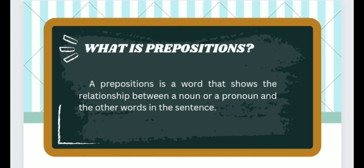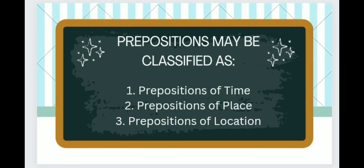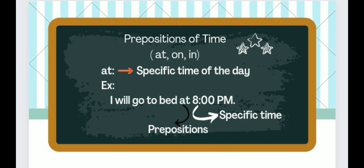A preposition is a word that shows the relationship between a noun or a pronoun and the other words in the sentence. Prepositions may be classified as: one, prepositions of time; two, prepositions of place; and three, prepositions of location. But I will discuss prepositions of time only. Now let's study the prepositions of time.